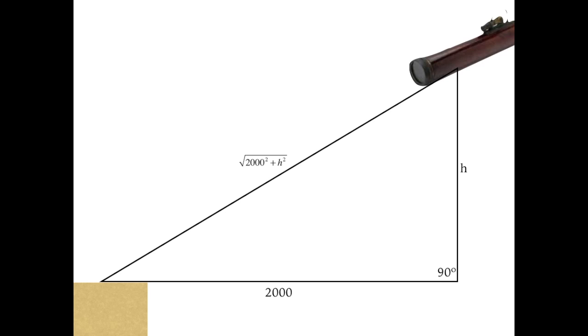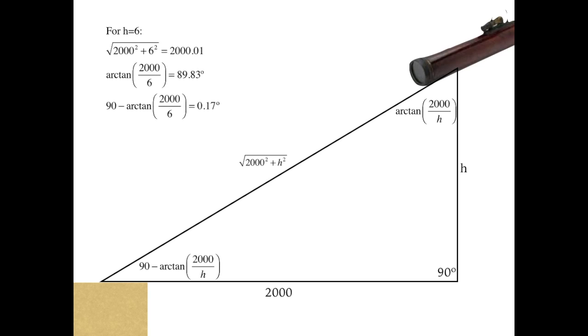Given that this triangle is a right triangle, the angle by the telescope will measure the arc tangent of 2000 over H, and the angle by the shore, the angle of elevation, will measure 90 minus arc tangent of 2000 over H. For example, if the telescope is held 6 Amos off the water, the distance from the telescope lens to the shore won't be that much farther than 2000 Amos it is horizontally. The angle must be held is 89.83 degrees, and the angle of elevation will therefore be 0.17 degrees.